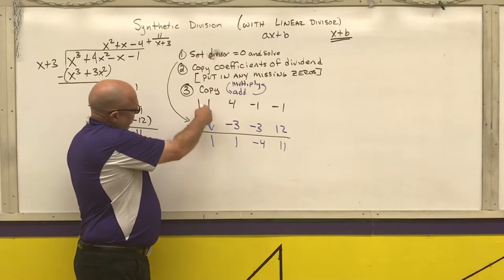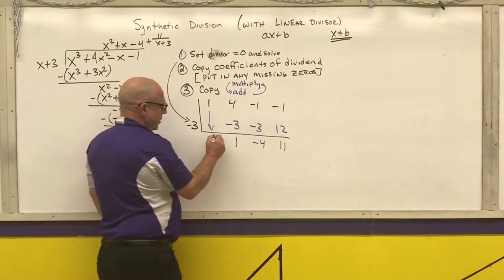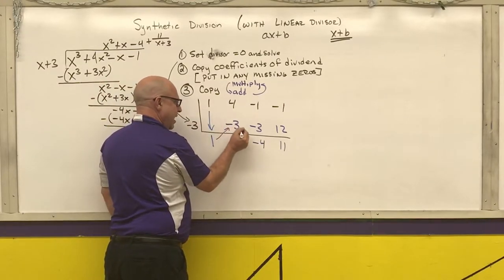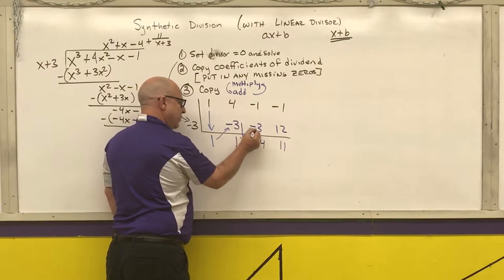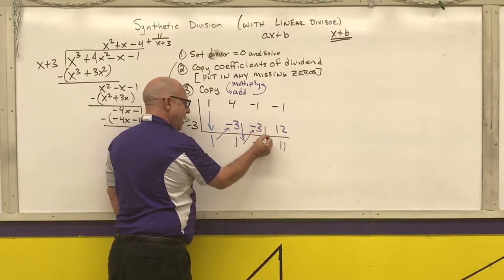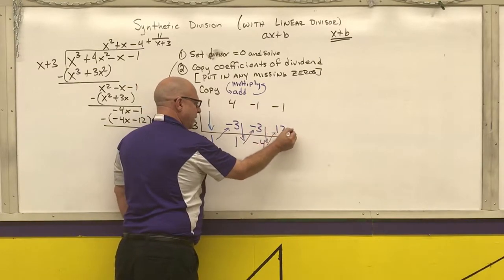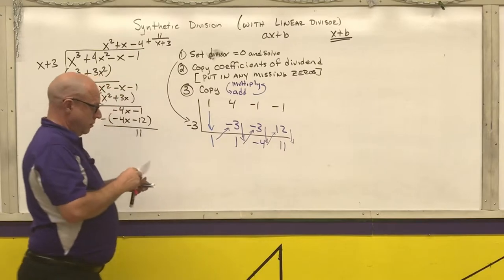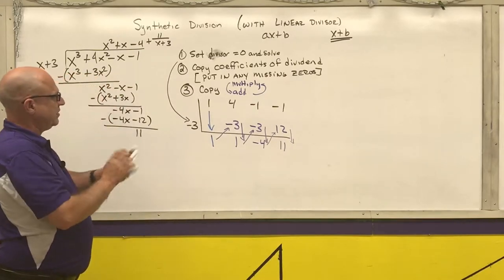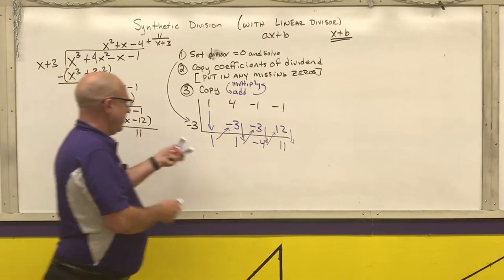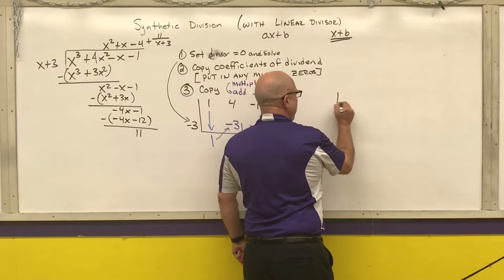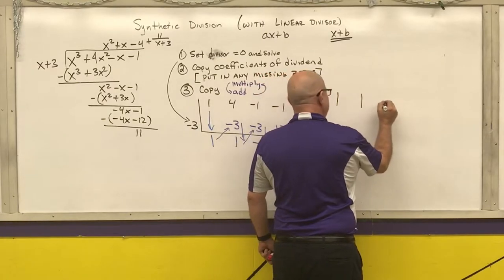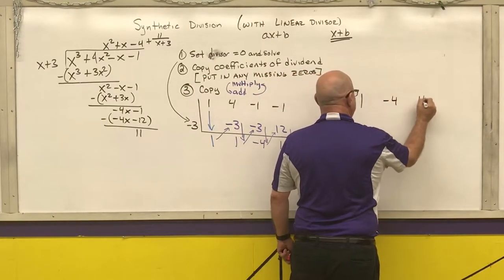So I come down, copy it, multiply, add, multiply, add, multiply, and add. Writing down the numbers I had: 1, 1, negative 4, and 11.